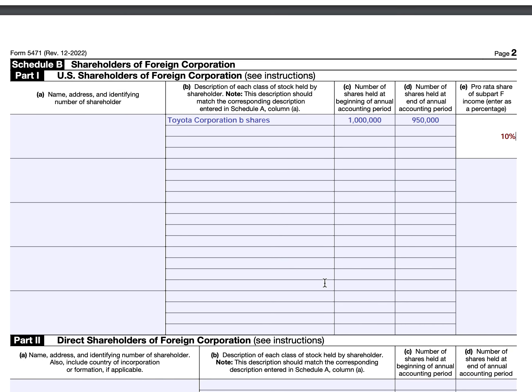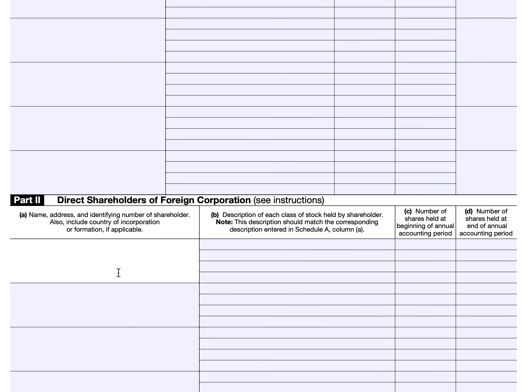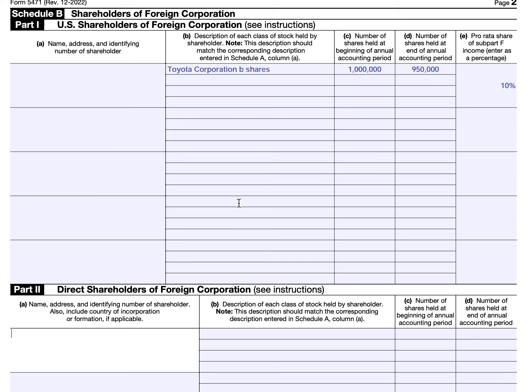Part 1 is for U.S. shareholders. In Part 2, it's for direct shareholders, and Category 1A, 1C, 3, 4, 5A, and 5C filers must complete it. You would report the direct shareholders of the foreign corporation. If it's owned by a foreign disregarded entity (FDE), include the name of the FDE and then the owner of the FDE. As the shareholder, you would put your name, address, and identifying number.